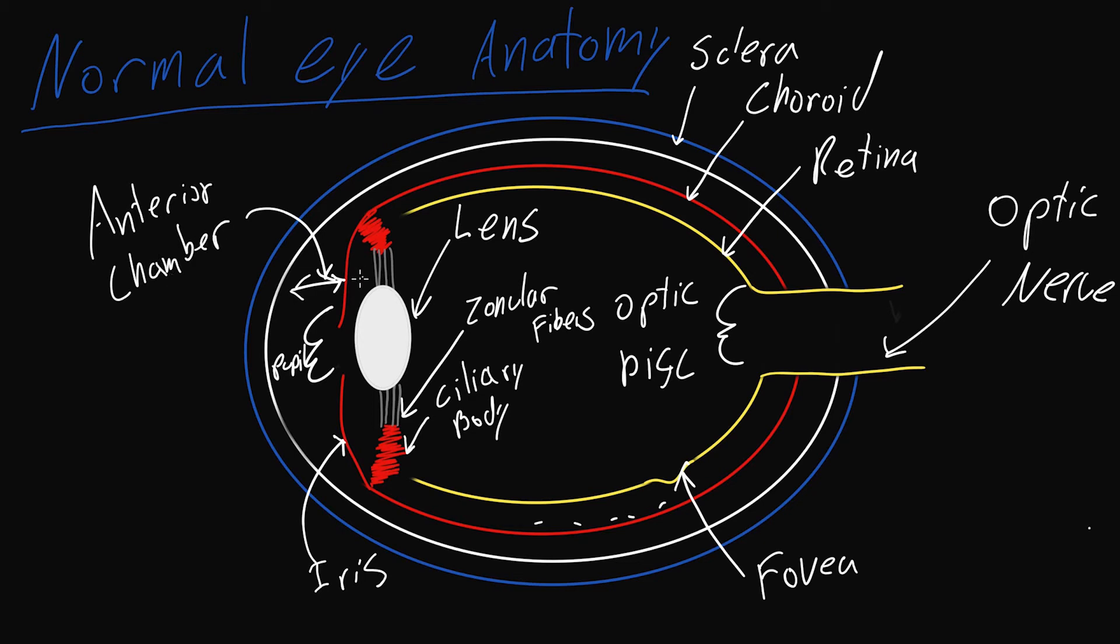The part behind the iris, but in front of the lens, here, is the posterior chamber. And behind the lens, and in front of the optic disc, this whole part, is the vitreous chamber.